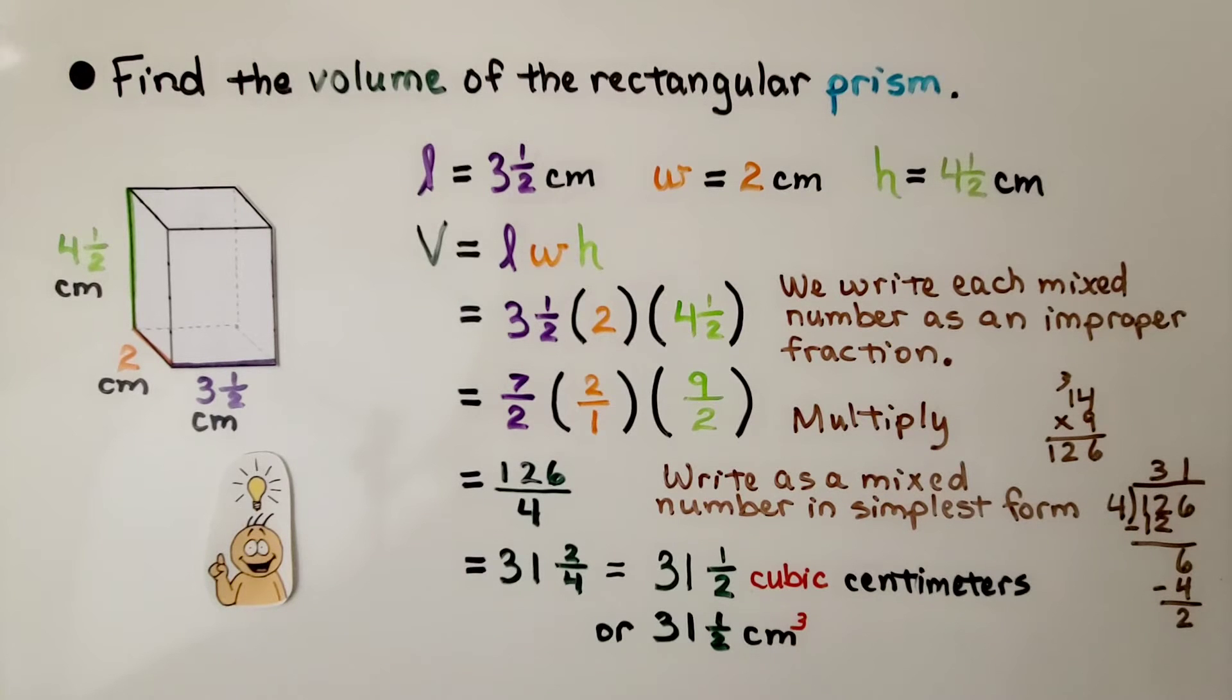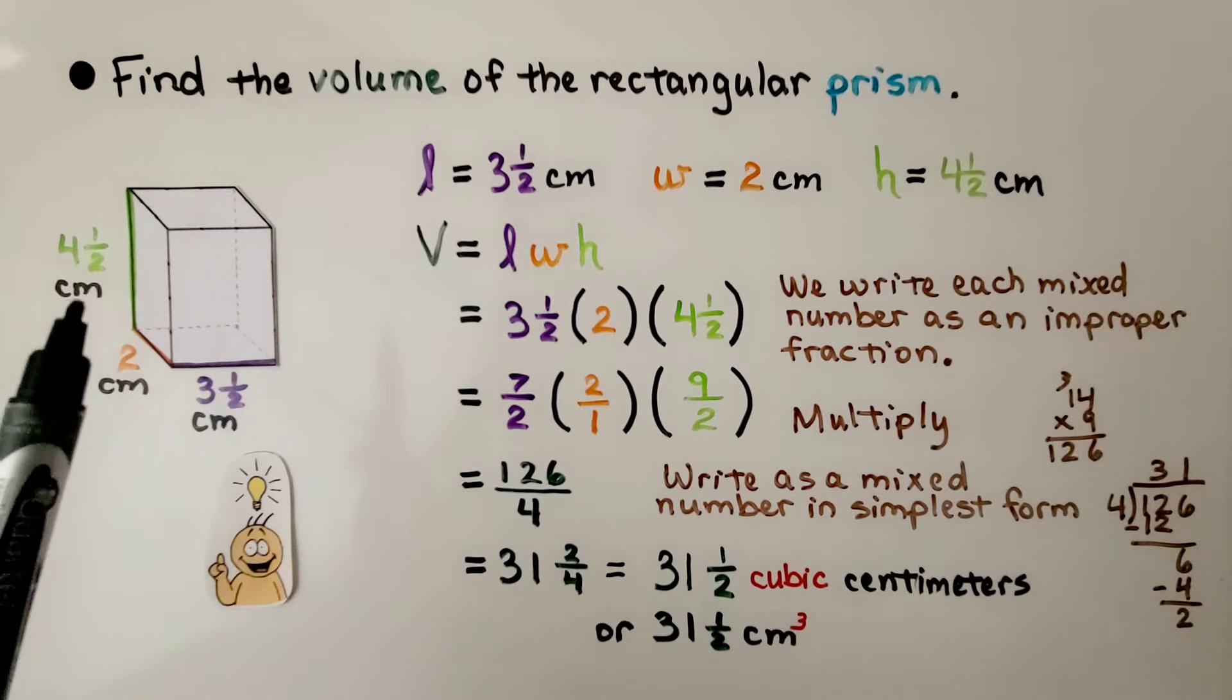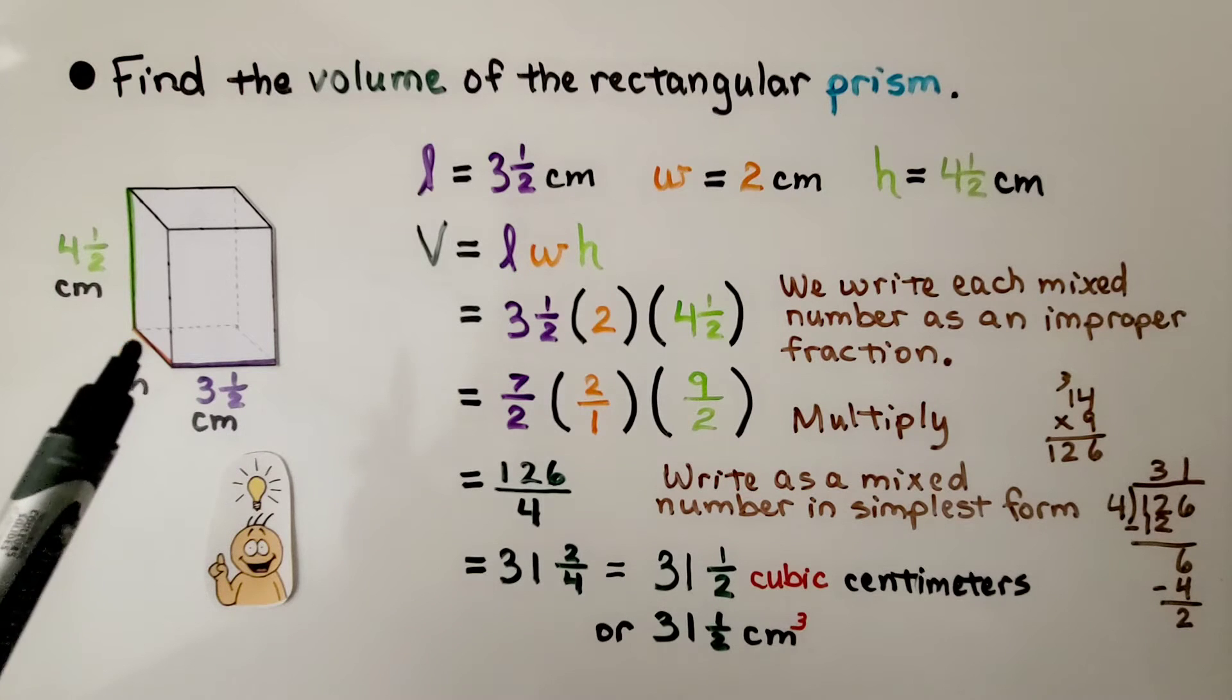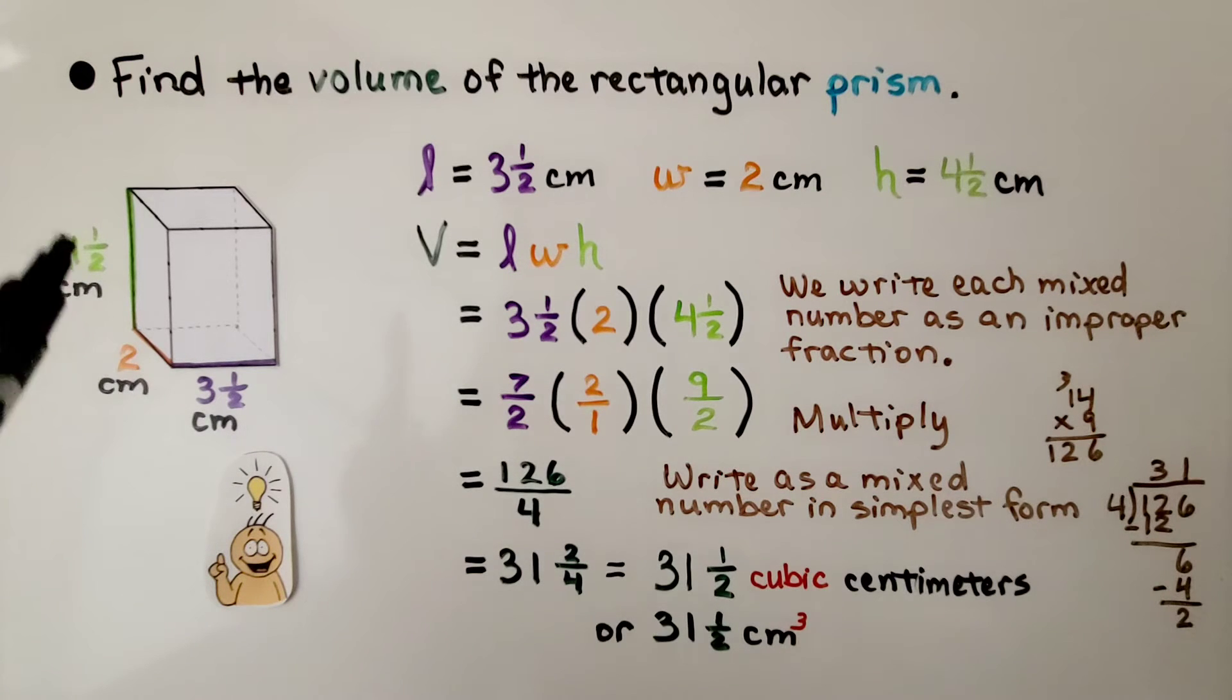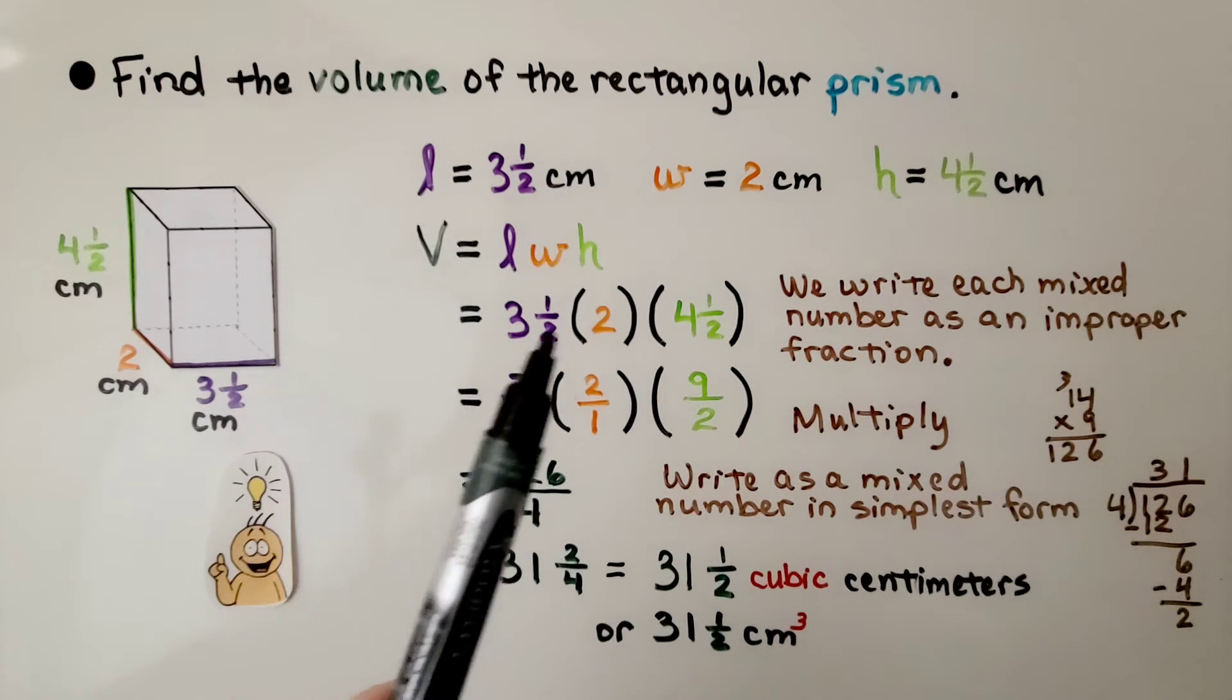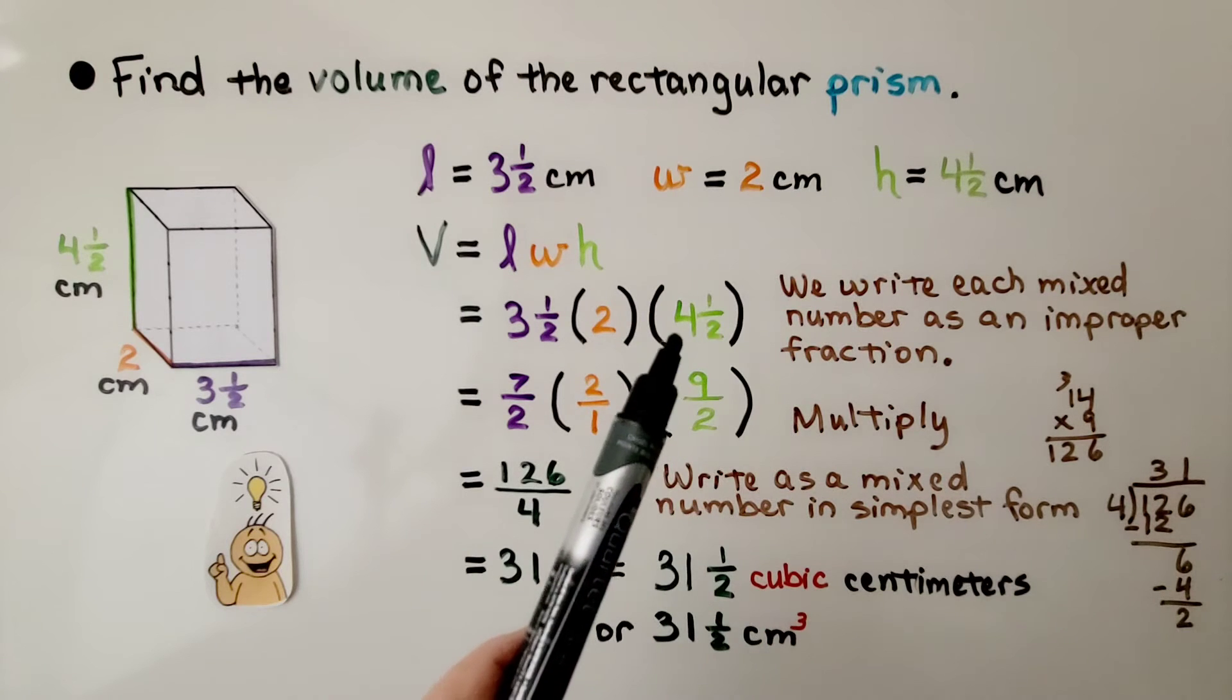Here it's telling us to find the volume of the rectangular prism, and we can see it's giving us the measurements. This length is three and a half centimeters, the width is two centimeters, and the height is four and a half centimeters. We do length times width times height, so we have three and a half times two times four and a half.